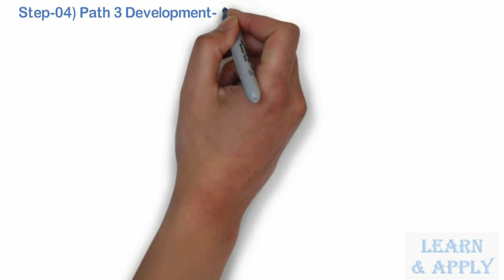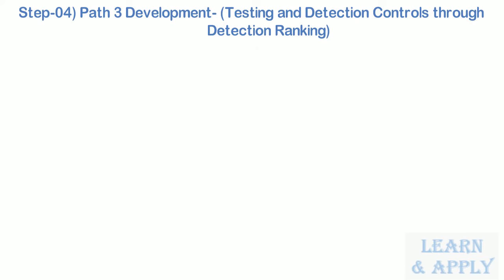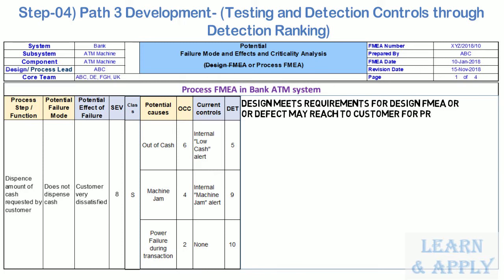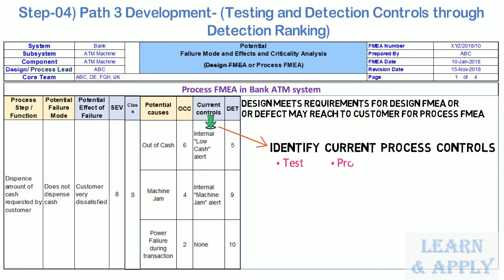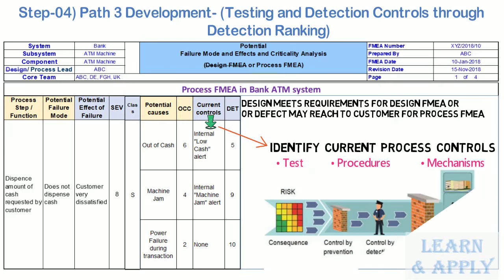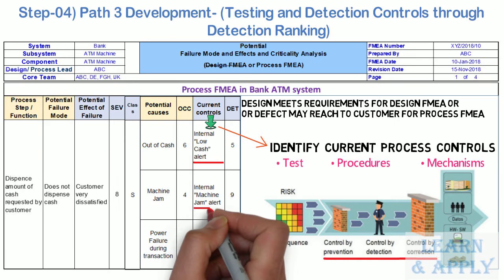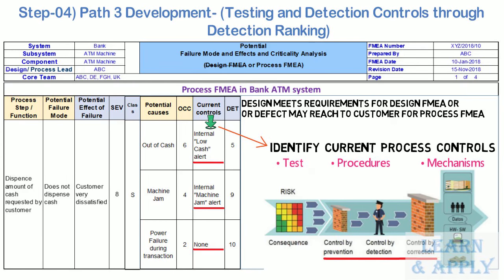Step 4: Path 3 development — testing and detection controls through detection ranking. Path 3 involves adding detection controls to verify that the design meets requirements (for design FMEA) or to identify if a cause and failure mode, if undetected, may reach the customer (for process FMEA). For each cause, identify current process controls — these are tests, procedures, or mechanisms in place to keep failures from reaching the customer. They may prevent the cause, reduce its likelihood, or detect failure after it has occurred but before the customer is affected. In our ATM example, the current controls are: internal low-cash alert, internal machine jam alert, and no control, respectively, for the causes listed in Path 2.